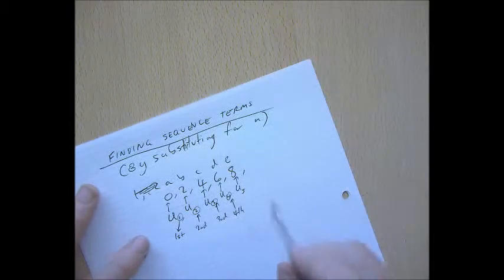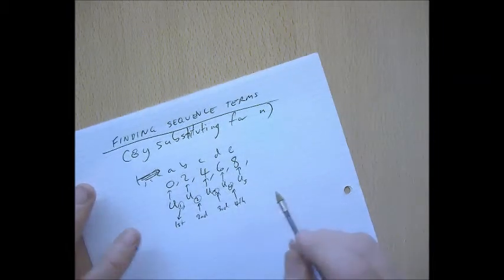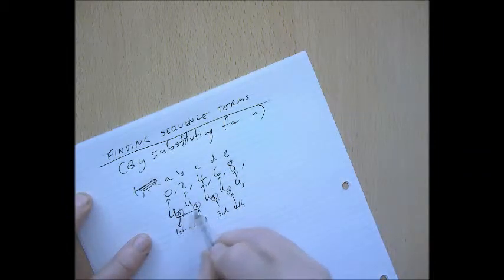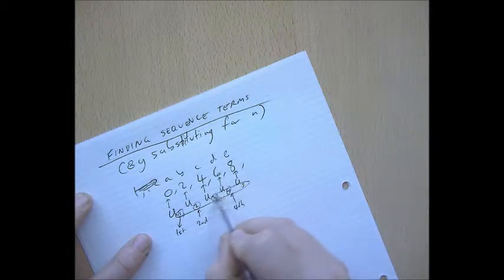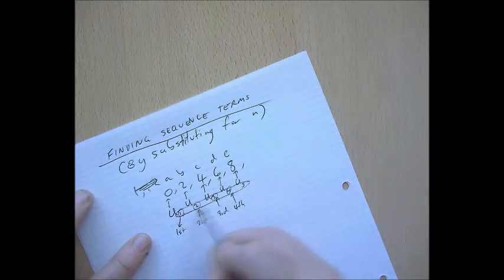Now, the whole point of algebra is to talk about a whole bunch of possibilities at the same time. So, if this little subscript could be 1, 2, 3, 4, or 5, just imagine it as u with a subscript of n.